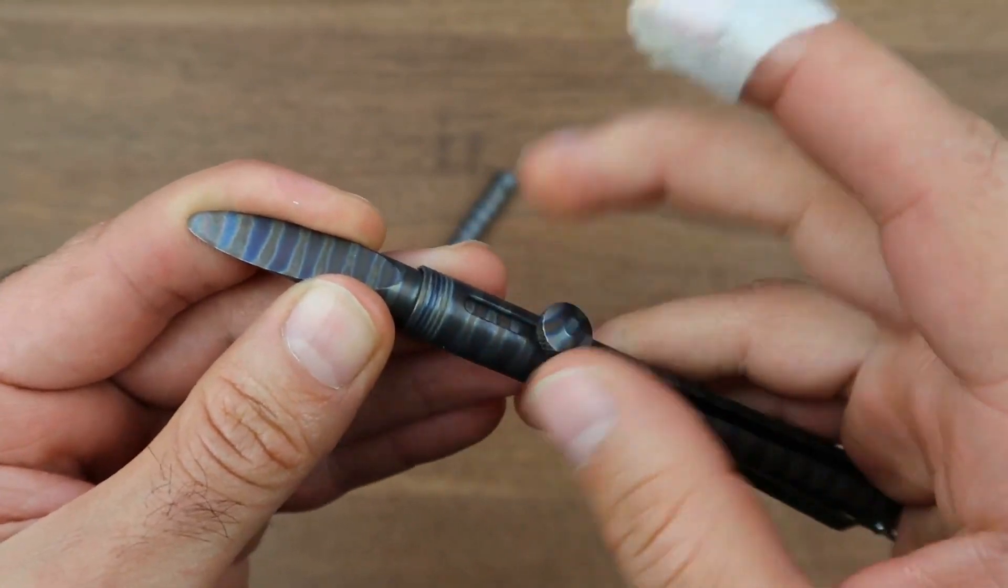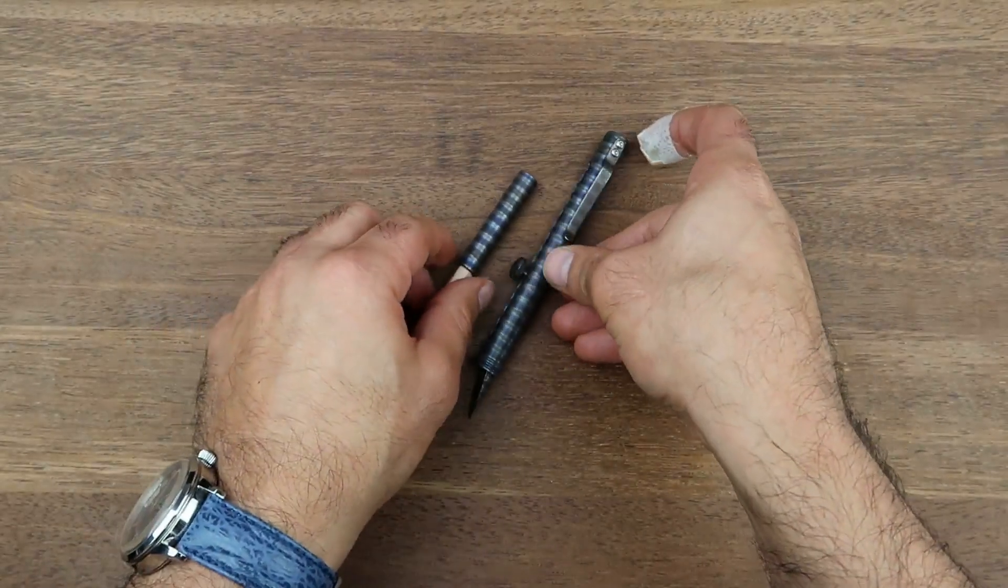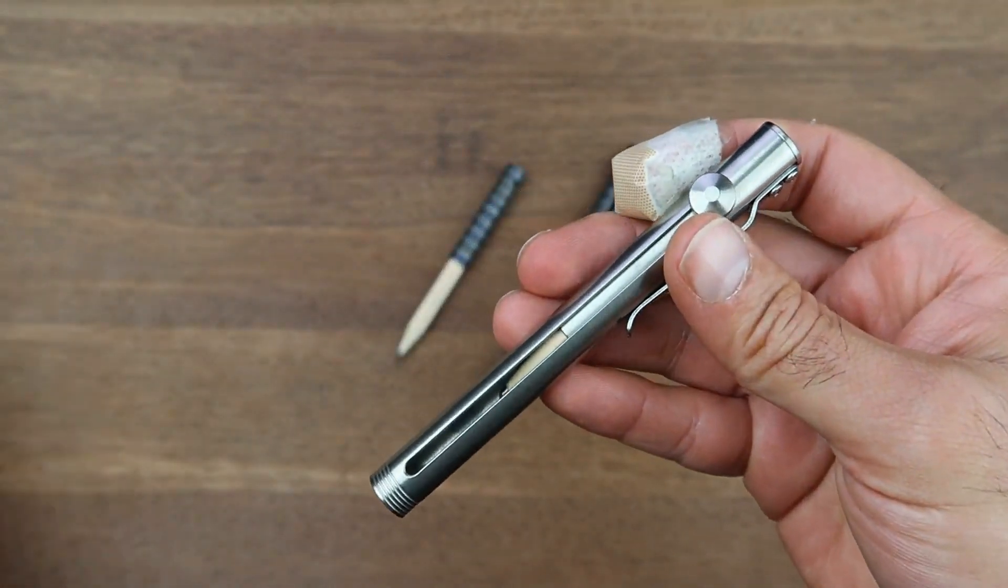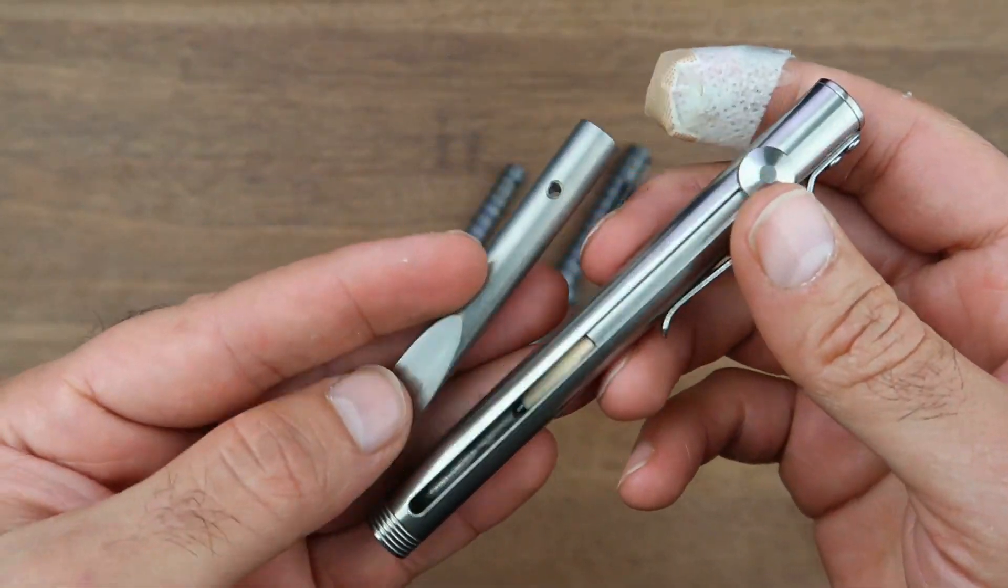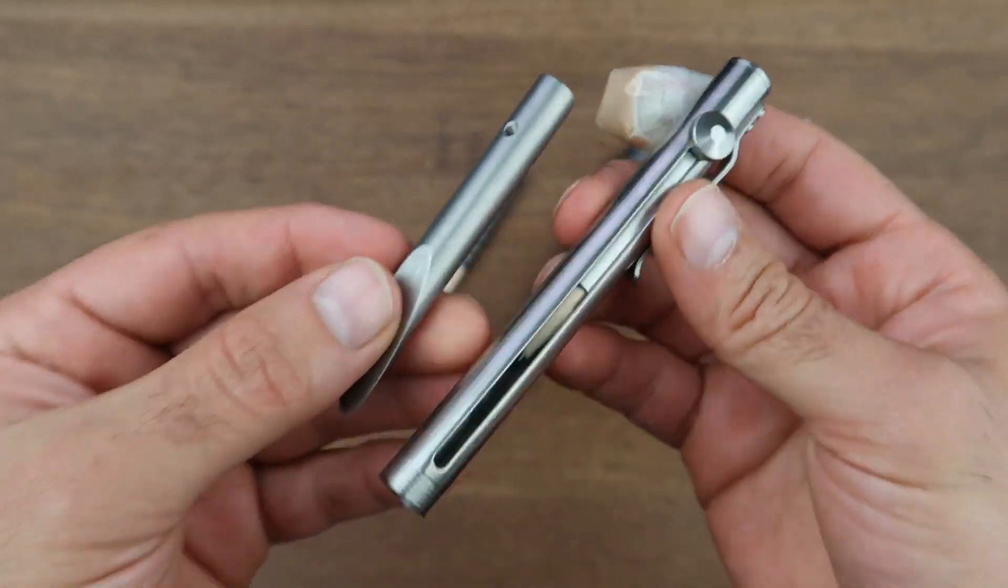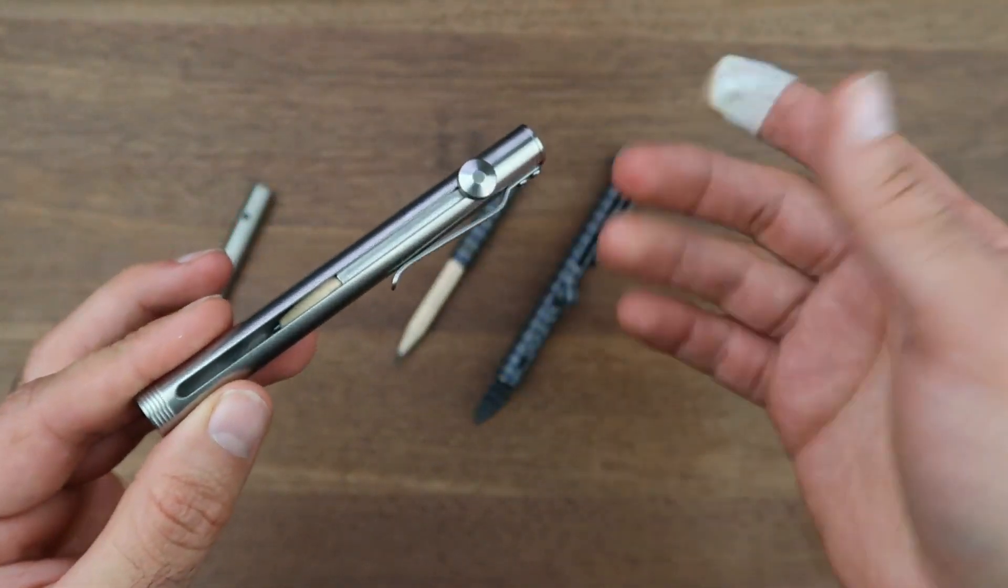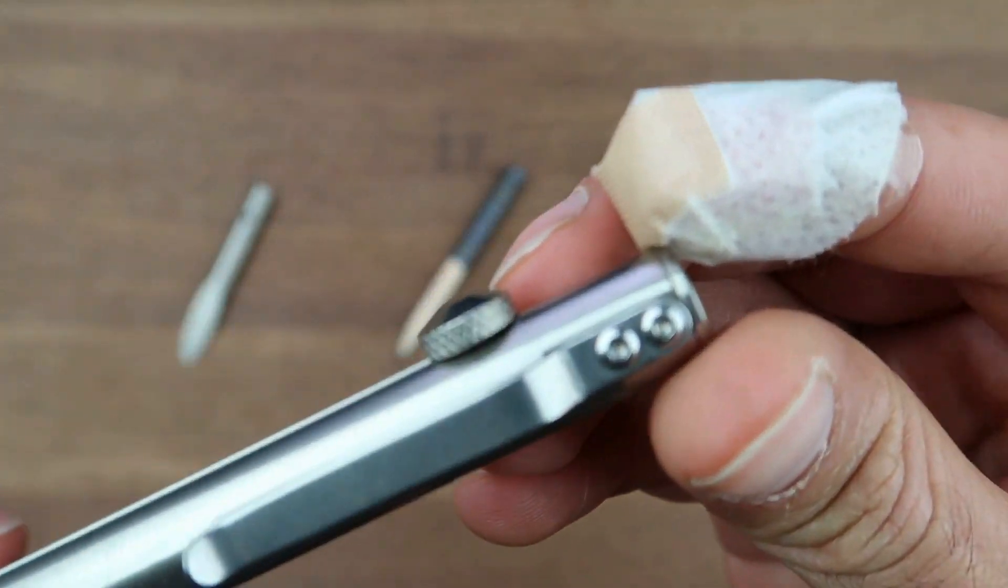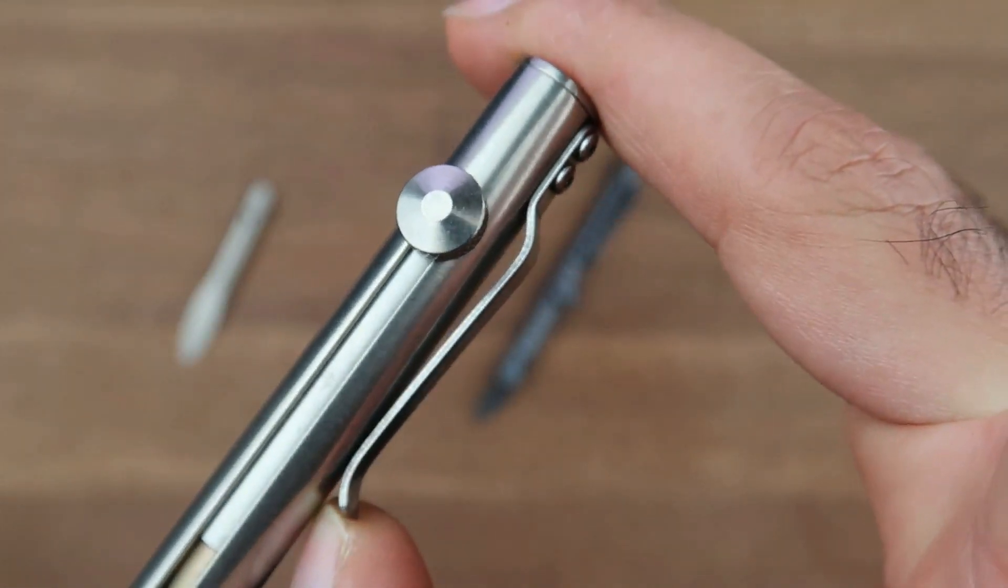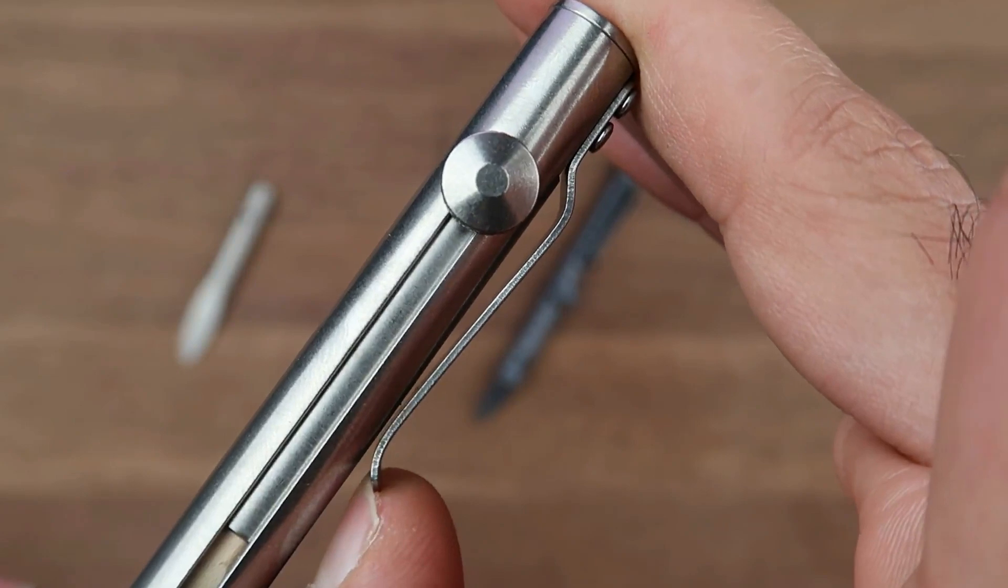This was the flame anodized version. We also have the satin finish as well, a little bit simpler in terms of finishing but exactly the same, basically coming in two different finishes on the surface. I'll give you a close up. You have this very simple titanium pocket clip, nice retention.